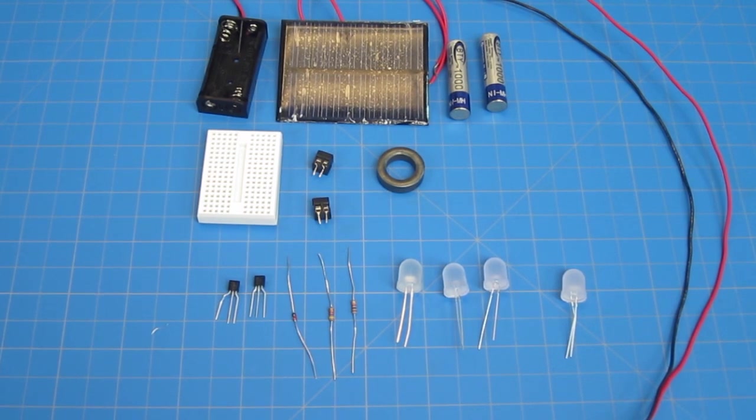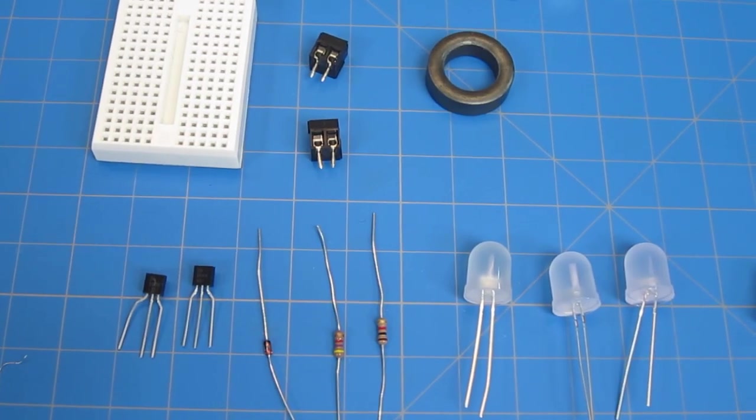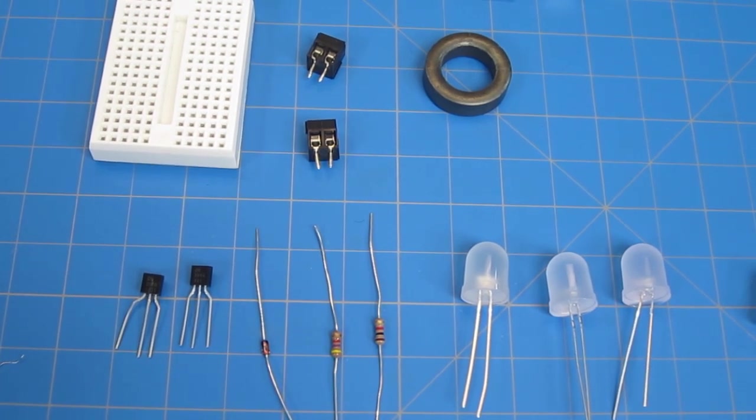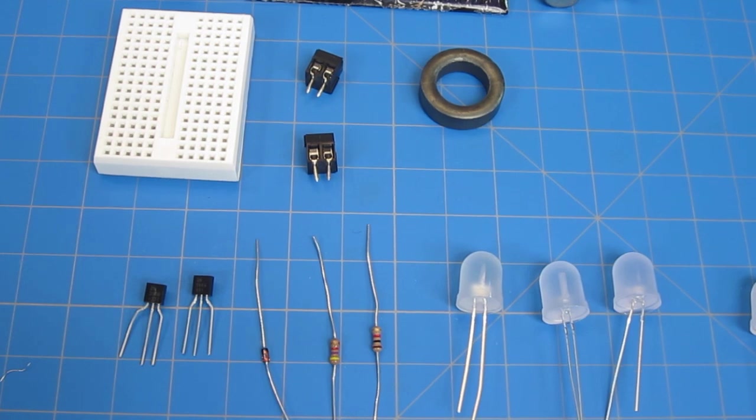You'll need two pin terminals, a PNP transistor and PN transistor, diode, 4.7 kiloohm resistor or 1,000 ohm resistor, and an LED of your choice.